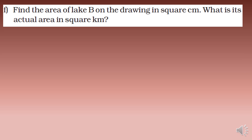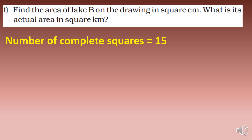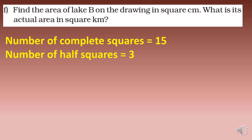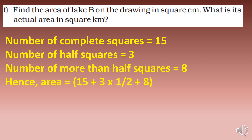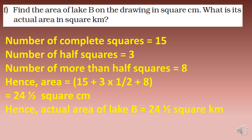Find the area of Lake B on the drawing in square centimeters. The number of complete squares is 15, number of half squares is 3, and number of more-than-half squares is 8. Counting half squares as half and more-than-half as full, the area is approximately 24 and a half square centimeters. Hence the actual area of Lake B is 24 and a half square kilometers.